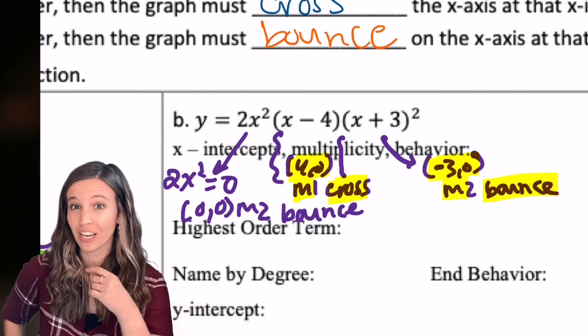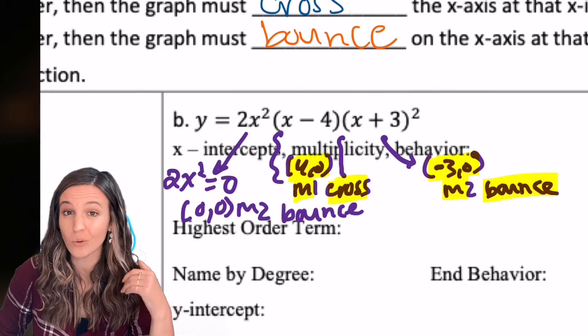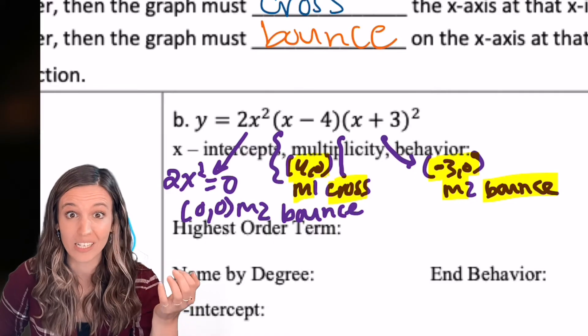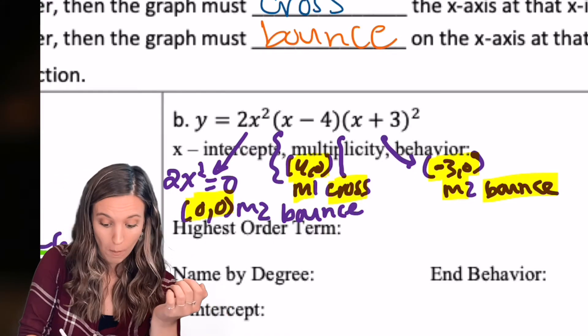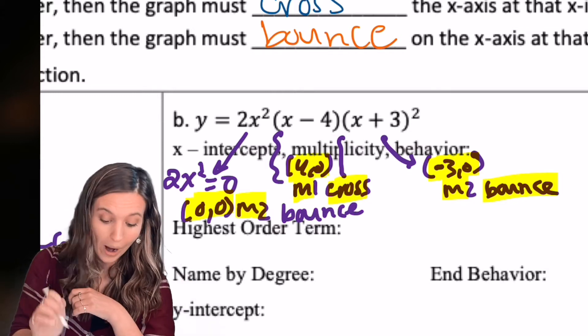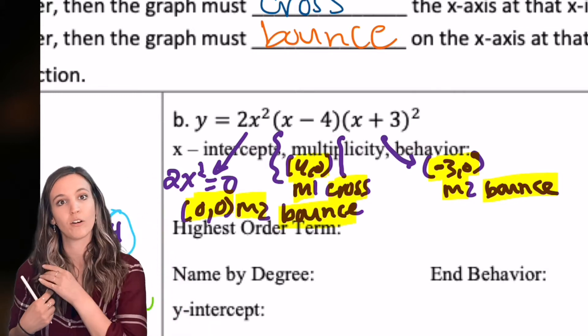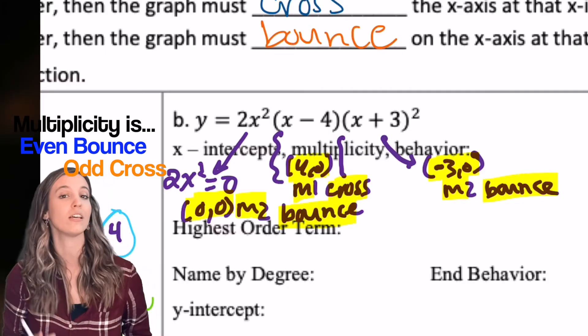But wait, did you forget that 2x squared? If I set 2x squared equal to zero and solve, I get x equals zero. So zero, zero is also an x-intercept, multiplicity of two because it was being squared, so I have a bounce there. Remember, if the multiplicity is even, we bounce. If it's odd, we cross.